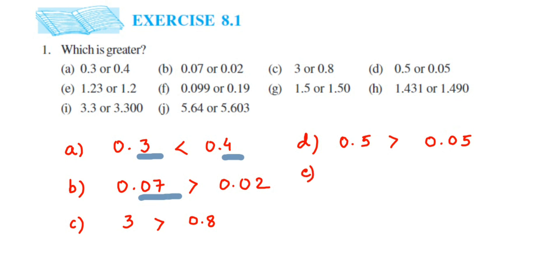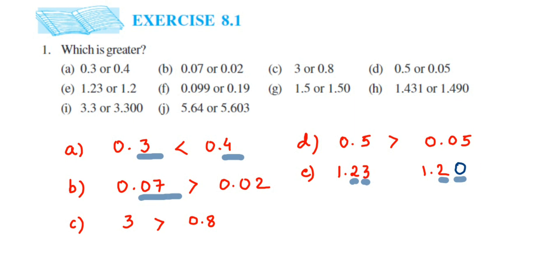The next question: 1.23 and 1.2. The whole part is 1 in both. After decimal, the tenth place is 2 in both — cannot compare. Next number: here we have 3, and in 1.2 there is no number, which means we assume zero. Three is greater than zero, so 1.23 is greater than 1.20.